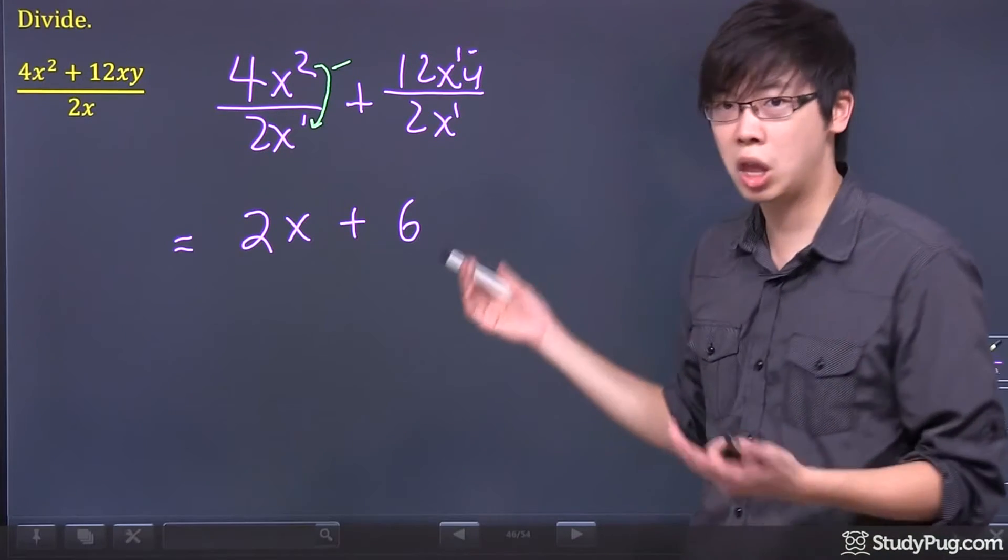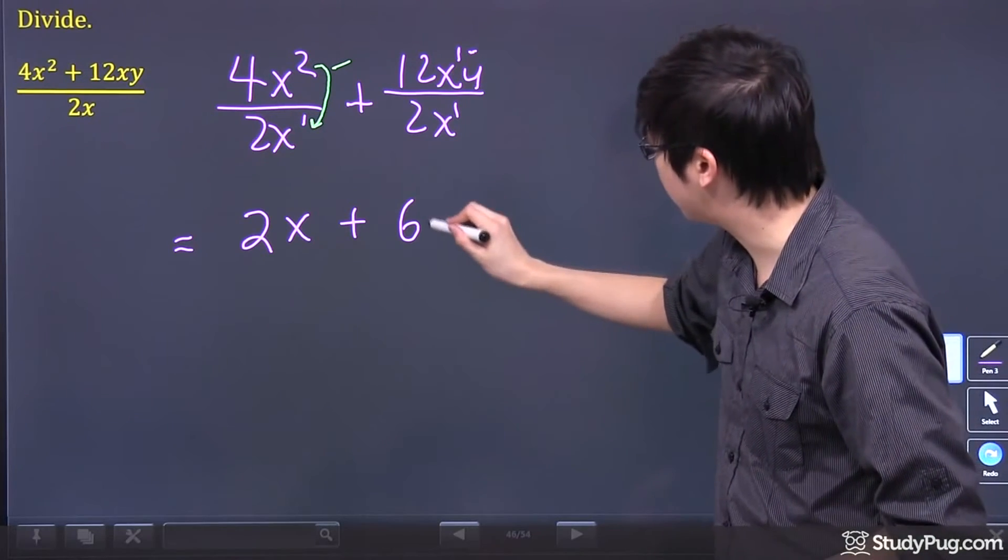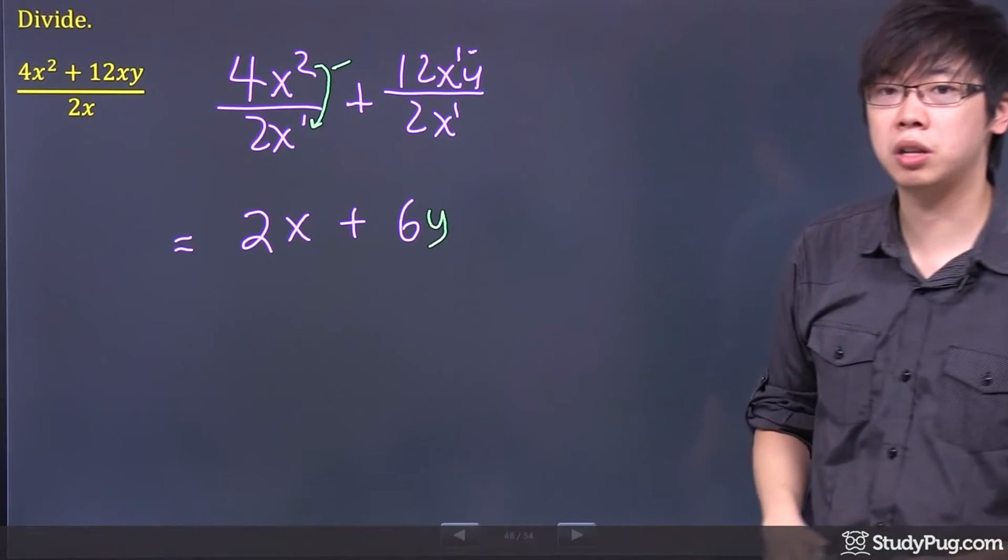Then you get yourself a y at the very end. So that one has nothing to do. So you just have to bring it down.